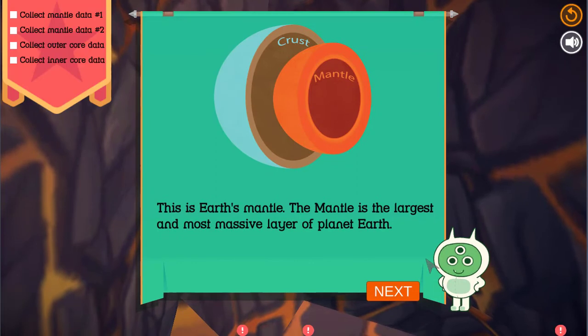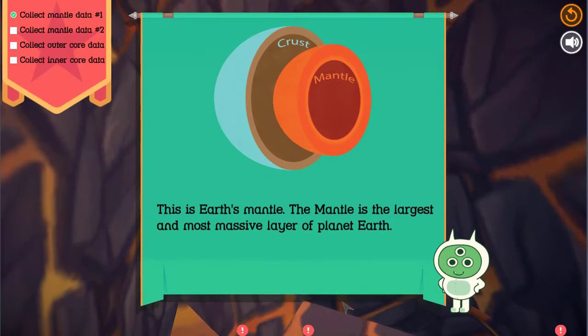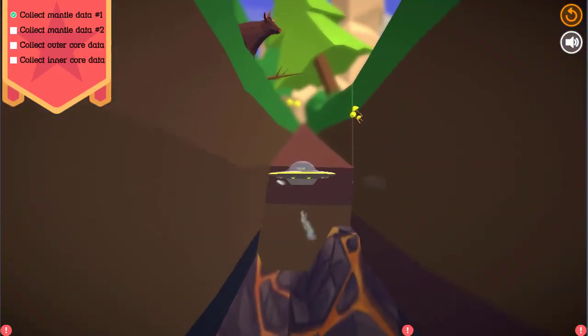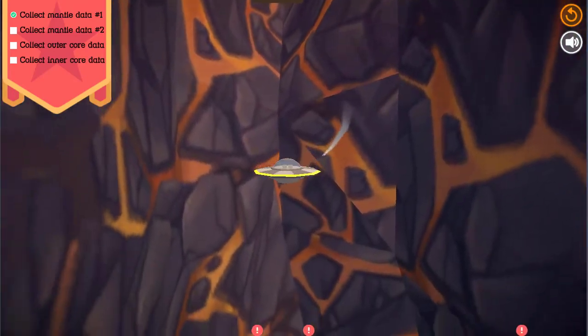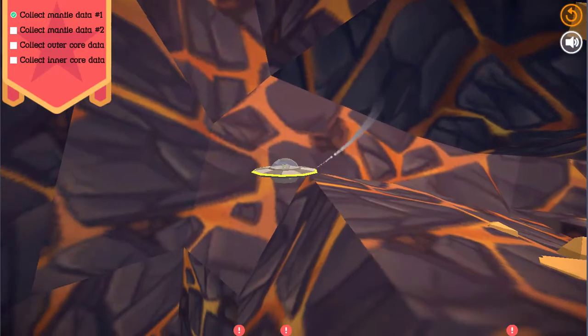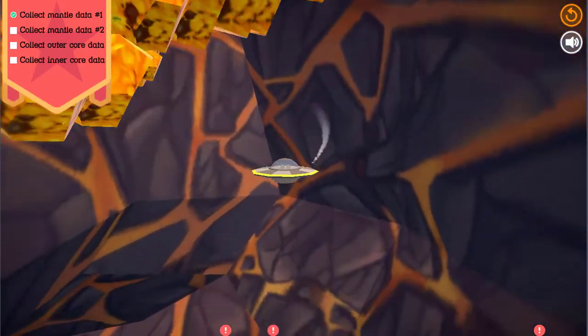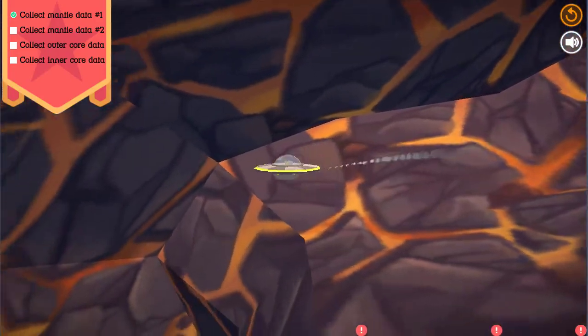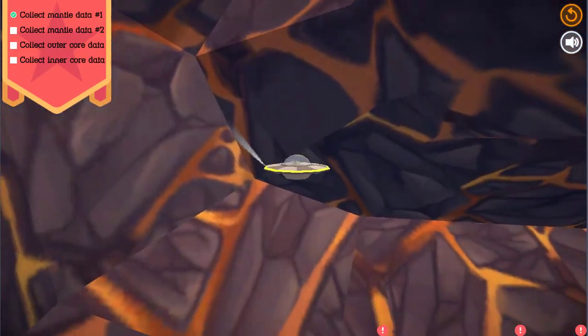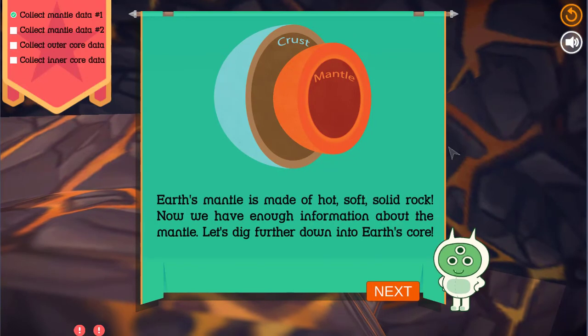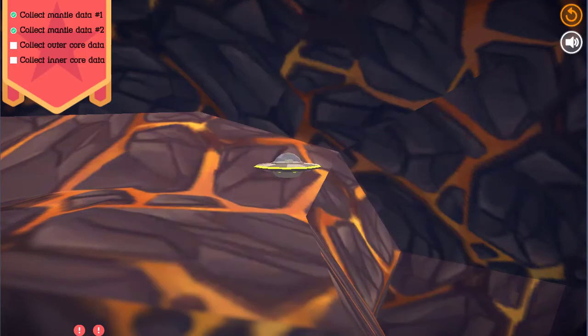This is Earth's mantle. The mantle is the largest and most massive layer of planet Earth. Earth's mantle is made of hot, soft, solid rock. Now we have enough information about the mantle. Let's dig further down into Earth's core.